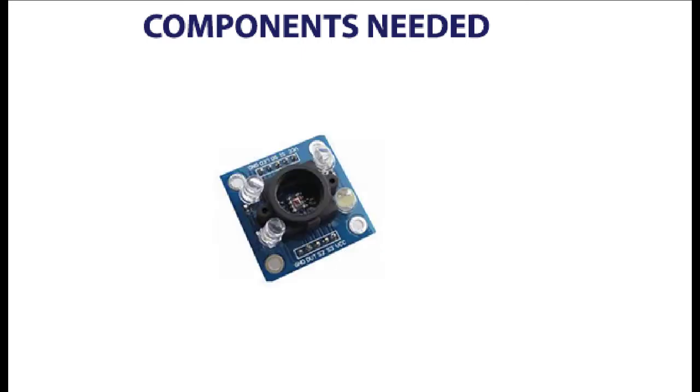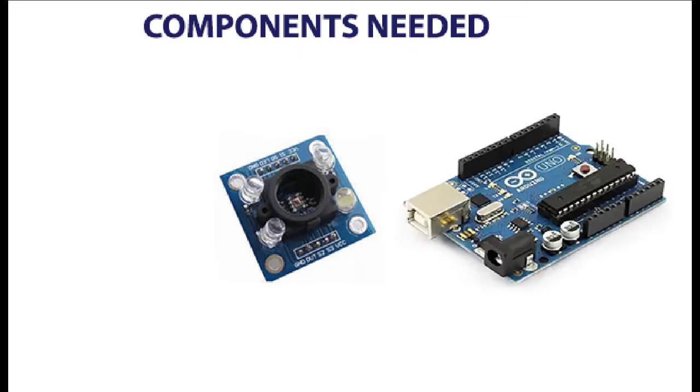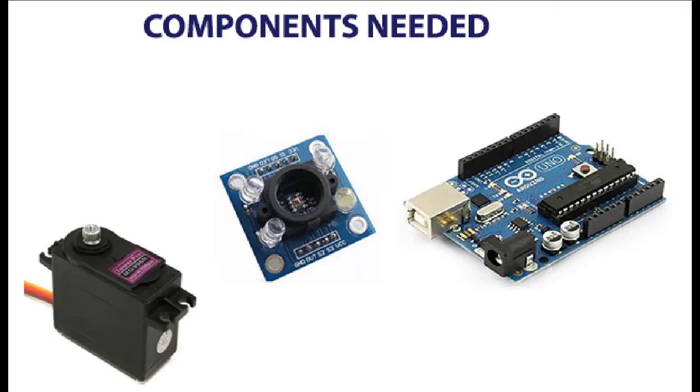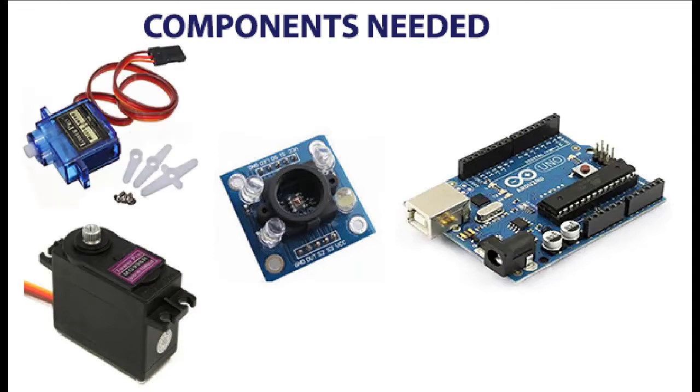So the components that we need for this project: first one is the sensor, the TCS23 sensor, then of course we need the Arduino board, that's where our program is going to be. Then we also need the servo motor, so this is a major servo motor that is going to be moving the pepper, then another servo motor for helping us in our selection and dropping, that's the separation. So I think these are the four major things that we need.